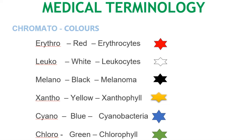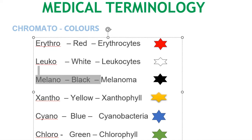Medical terminology related to colors: erythro means red — erythrocytes are red blood cells. Leuco means white — leucocytes are white blood cells. Melano means black — melanoma is related to skin cancer; melanoma means skin cancer.